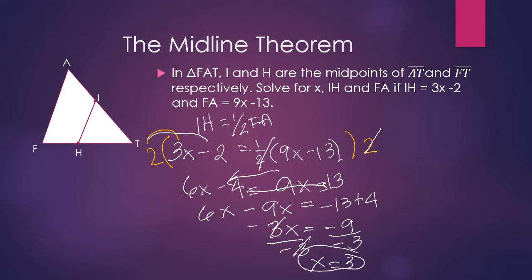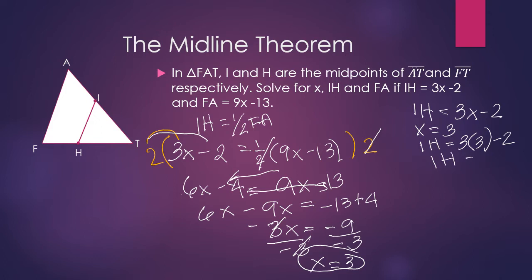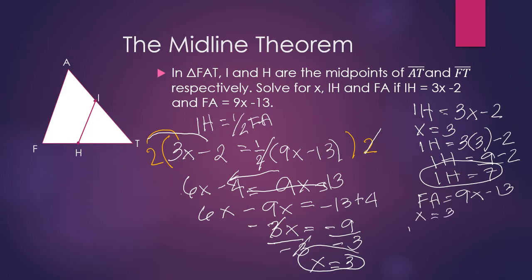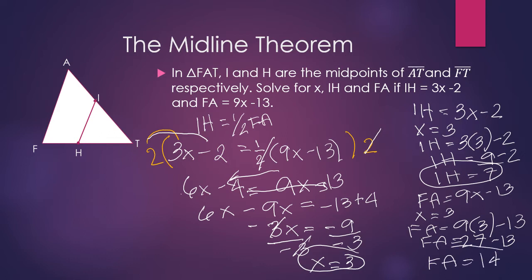Now we solve for IH and FA. IH equals 3X minus 2; substituting X equals 3 gives IH equals 3 times 3 minus 2 equals 9 minus 2, so IH equals 7. For FA: FA equals 9X minus 13; substituting X equals 3 gives FA equals 9 times 3 minus 13 equals 27 minus 13, so FA equals 14. We have now solved for X, IH, and FA.